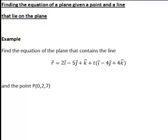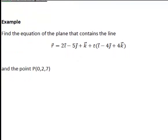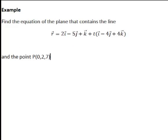Here we will have a look at finding the equation of a plane given we know both a point and a line that lie on the plane. We are looking at a plane that contains line r equals 2i minus 5j plus k plus parameter t times i minus 4j plus 4k, and a point P(0, 2, 7) that also lies on the plane.